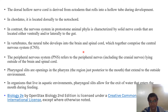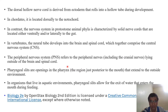In vertebrates, this neural tube develops into two parts: one part is the brain, and the other is the spinal cord. Both the brain as well as the spinal cord make up the central nervous system.